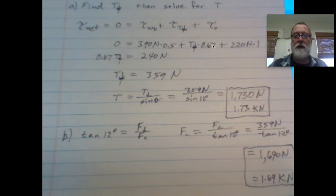So then what we're going to do is we're going to add because this is a negative number. We're going to add 390 times 0.5 and this is a negative number. So we're adding 220 times one. And then we end up with that's 240. And then this is 0.67 perpendicular T right here.